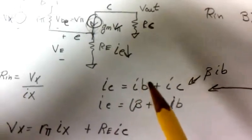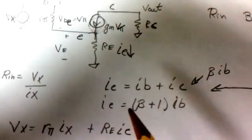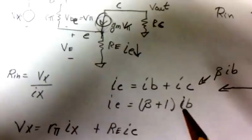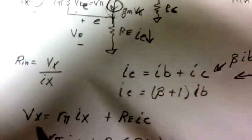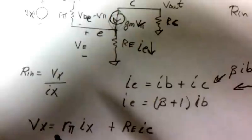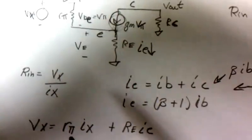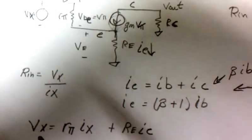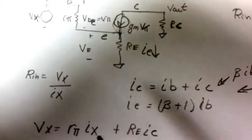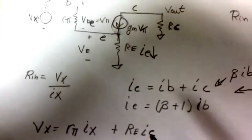Now, since this will be a lot less than this, I could set it to equal to zero right now and I would get ie approximately equal to beta times IB, but we'll leave it in there for right now. So if I have a voltage VX and I have a test current, I should get the sum of the voltages: R pi times IX plus RE times this ie.